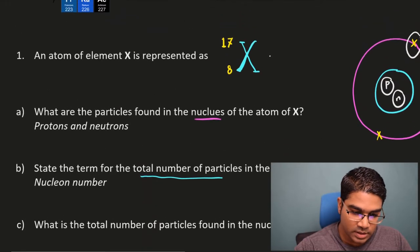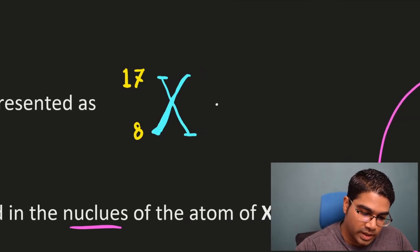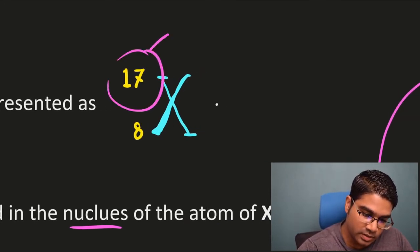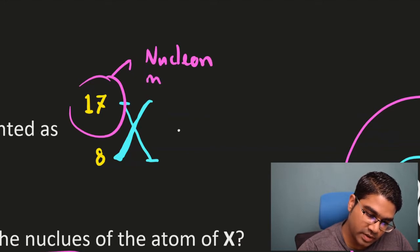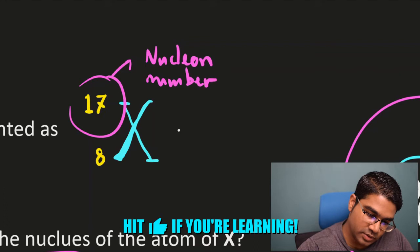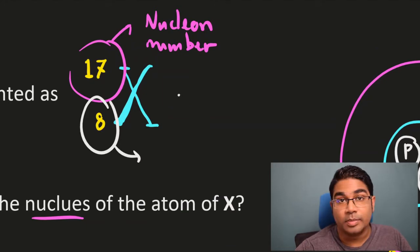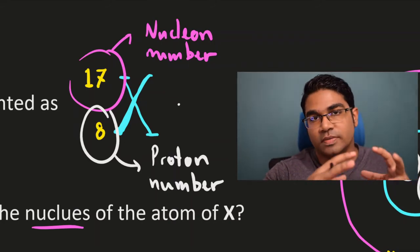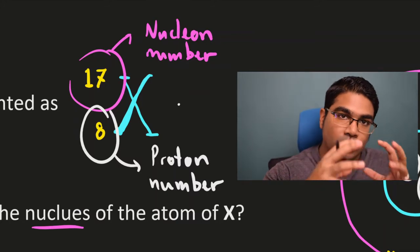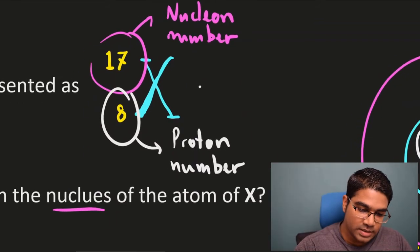What's the total number of particles found in the nucleus of atom X? We have two numbers: 17 and 8. The bigger number, 17, represents the nucleon number — sometimes called the mass number — because it represents the relative atomic mass. The number 8 at the bottom is the proton number. The total number of particles in the nucleus is the nucleon number, so the answer is 17.